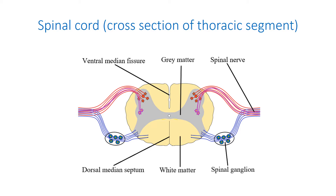These form 31 pairs of spinal nerves – cervical, thoracic, lumbar, sacral, and coccygeal. The cross-section of the spinal cord reveals gray matter shaped as a butterfly inside it. Each wing of the butterfly has a ventral, lateral, and dorsal horn. It is worth noting that the lateral horn is present only in the thoracic and upper lumbar segments.